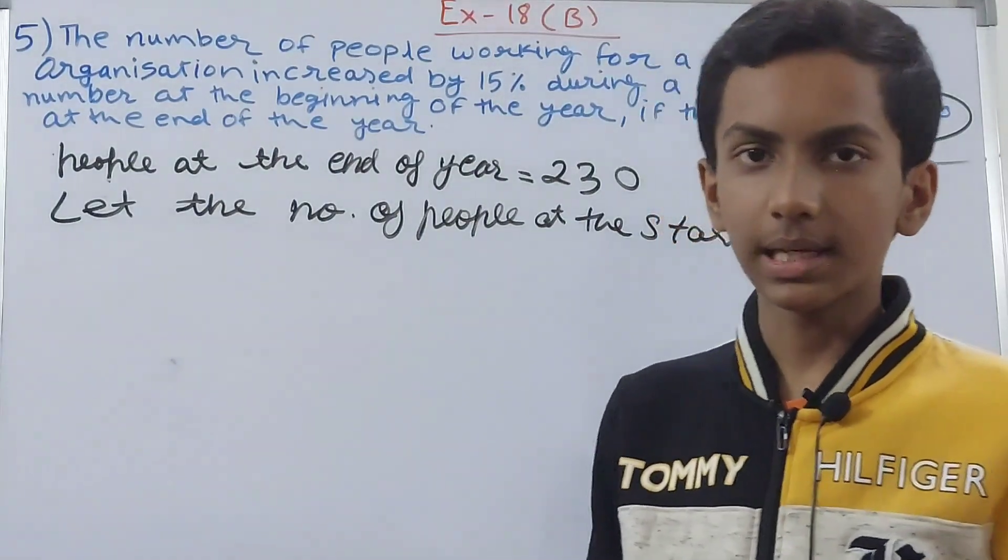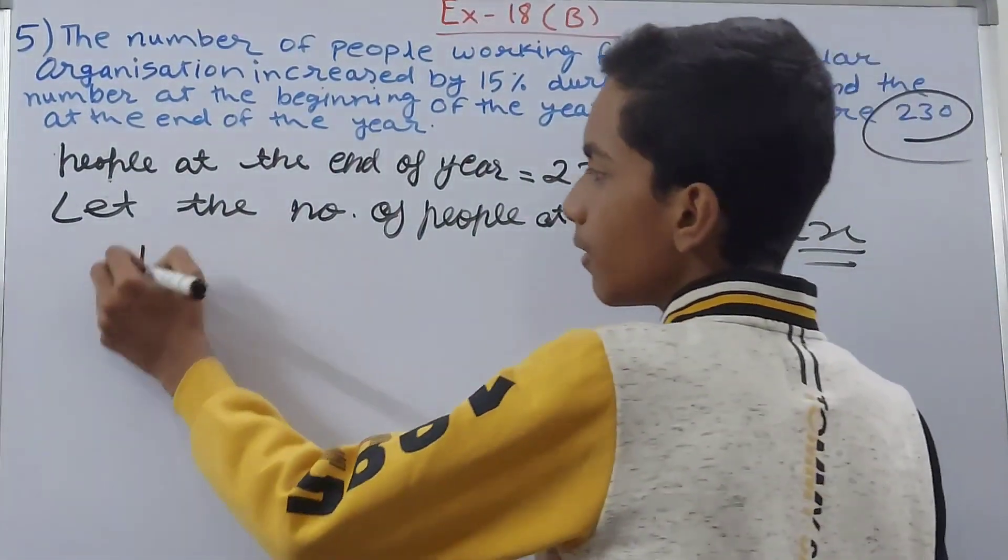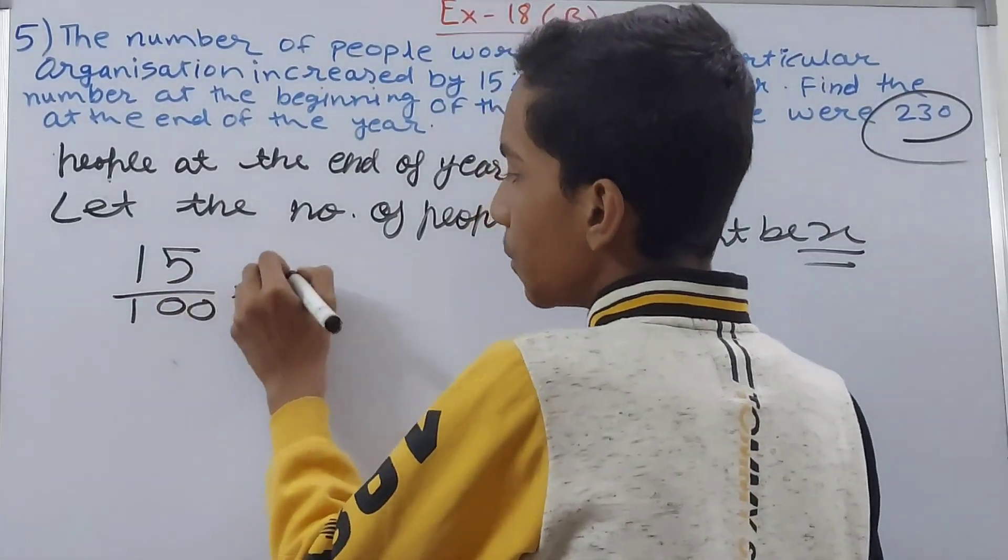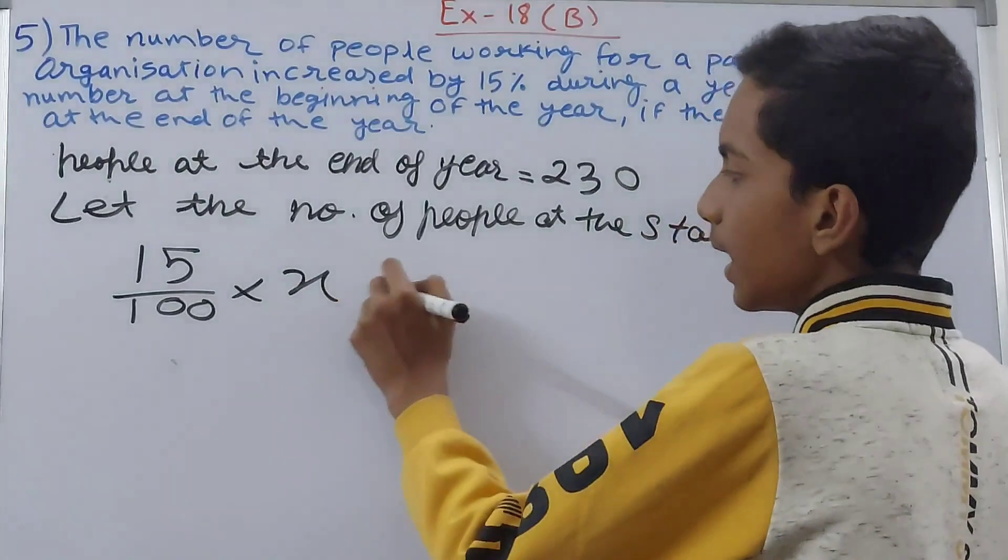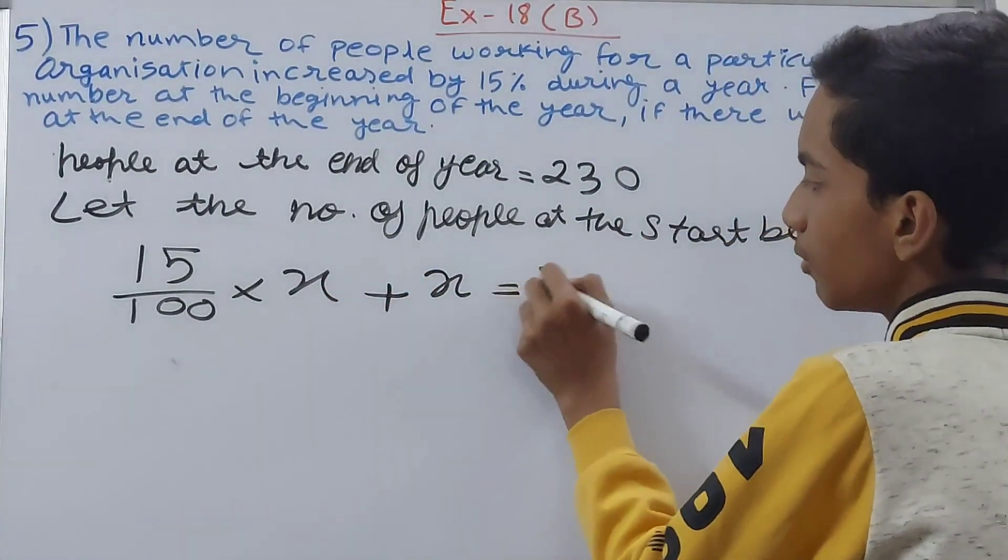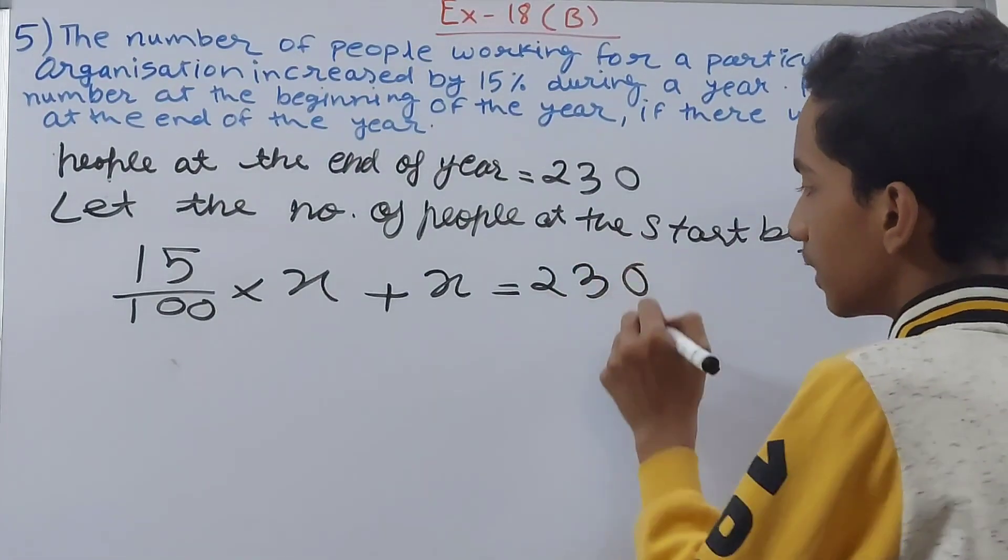So 15 percent of x becomes 15 upon 100 into x. This was increased in x only, so plus x, and that will give you 230. This 230 is the number of people at the end of the year.